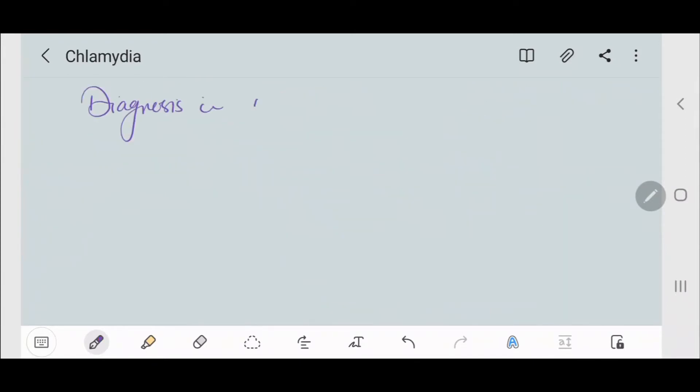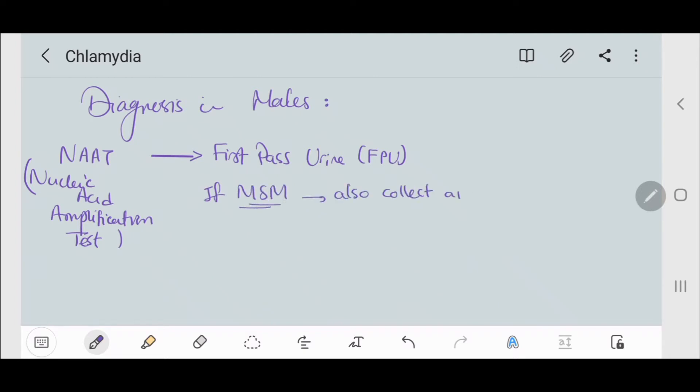We diagnose chlamydia using the nucleic acid amplification test (NAAT). That could be done through first-pass urine. But if the patient is of the group men who have sex with men, then we also need to collect anal and pharyngeal swabs, even if asymptomatic at these sites.